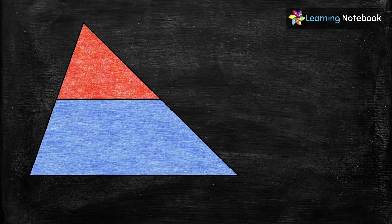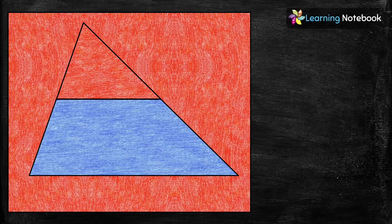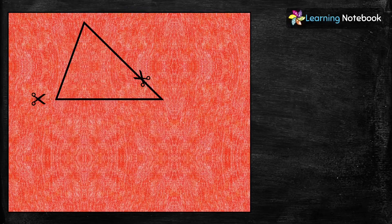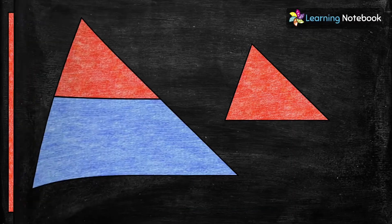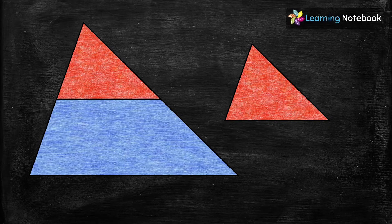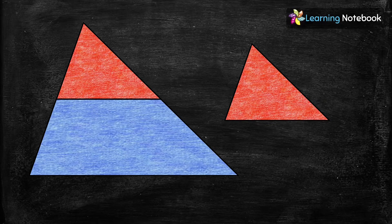Now take a red sheet and cut another red triangle from it such that both the red triangles are congruent. So now we have cut out another red triangle and thus we have got two red triangles with us that are congruent to each other.